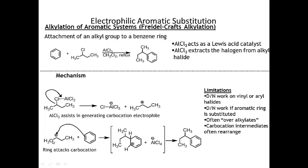The ring acts as a nucleophile and attacks the carbocation, placing the positive charge on the ring. The basic mechanism for electrophilic aromatic substitution is the same whether it's bromination, alkylation, or acylation. Aluminum tetrachloride then acts as a base, deprotonates, and this pair of electrons reestablishes aromaticity to give the alkylated product. There are some limitations: it doesn't work on vinyl or aryl halides, doesn't work if the aromatic ring is deactivated, you often get over-alkylation, and the carbocation intermediates often rearrange.